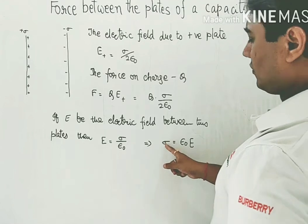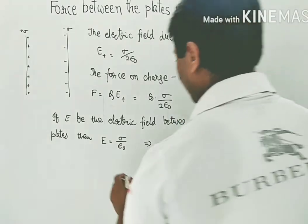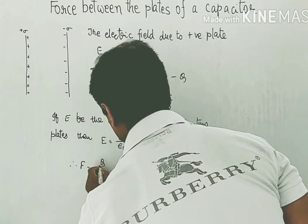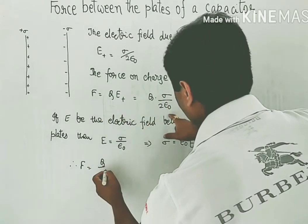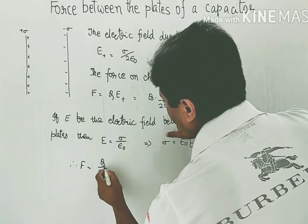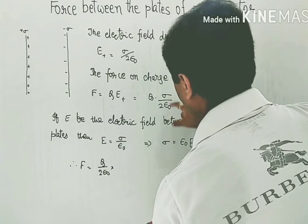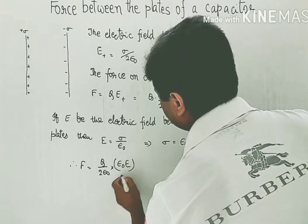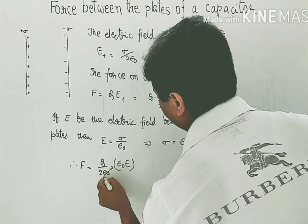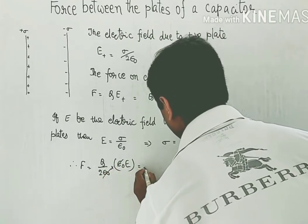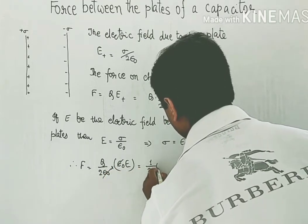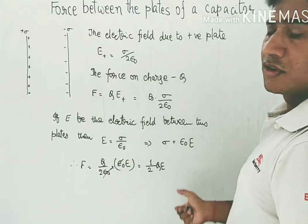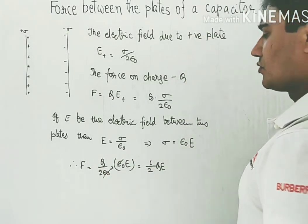Now we can substitute this value back. Therefore F comes out to be Q by 2 epsilon naught into sigma. Sigma is epsilon naught into E. The epsilon naught terms cancel, giving us F equals half Q into E as the value of force.